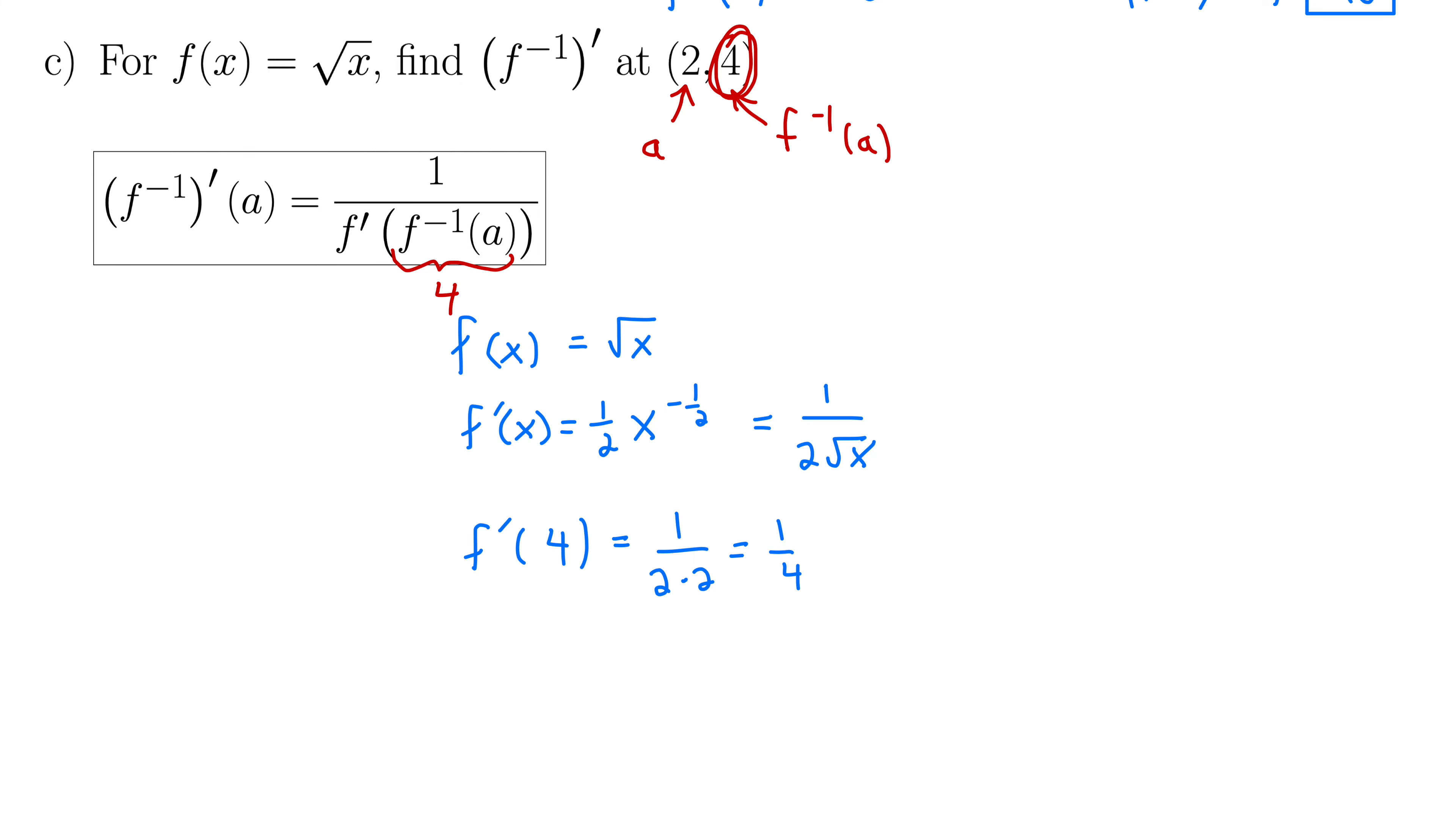And finally, we take 1 over that to get our end result. So that tells us that f⁻¹'(a) at the point 2 is 1 over 1/4, which of course is 4. So as long as your brain doesn't melt when you see this formula, once you start to use the formula, it's actually not too bad at all.